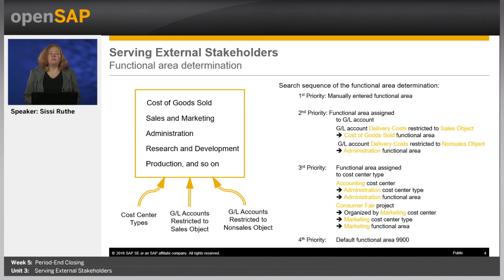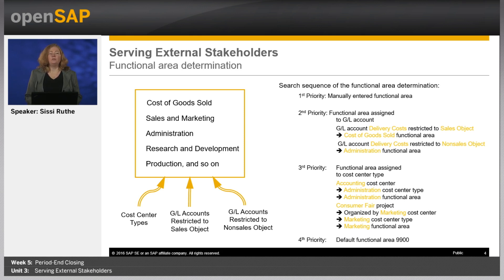We know now that the system uses functional areas to create income statements by function of expense. But how are these functional areas assigned to postings? In most cases, they are automatically determined based on configuration settings. The determination rules and their search sequence are described on this slide. The highest priority has a manually entered functional area. This is only possible in manual postings in general ledger, in the so-called journal entry vouchers, and is normally necessary for corrections. The second priority is the determination directly from the general ledger account.